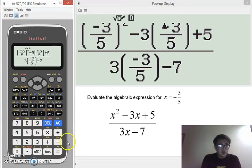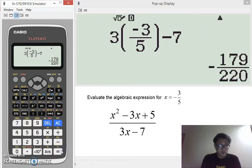So there, we will get this value negative 179 over 220. Now, isn't it hard and long to do because for every x, we substitute negative 3 over 5.